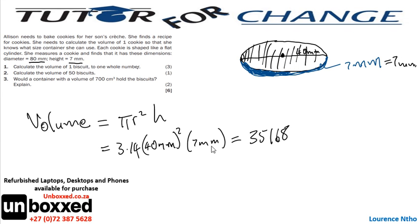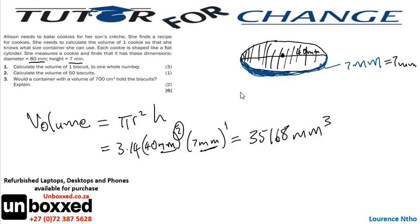Now for the units: when multiplying, we have two millimeters from the radius squared, and one millimeter from the height, giving us three millimeters total. That's why the answer is in millimeters cubed. It looks like Amanda made a mistake here.